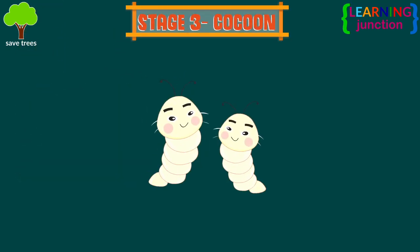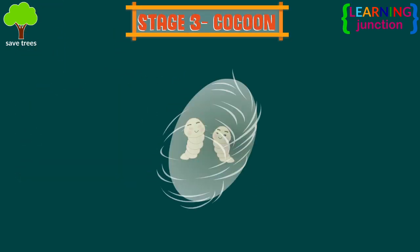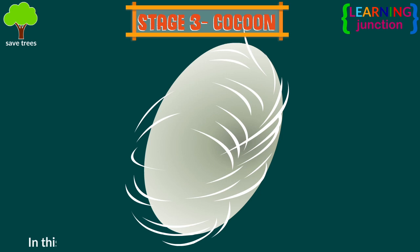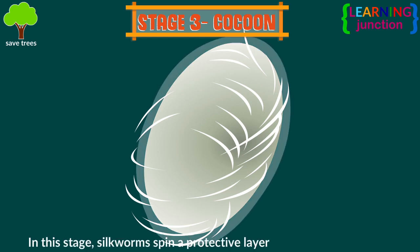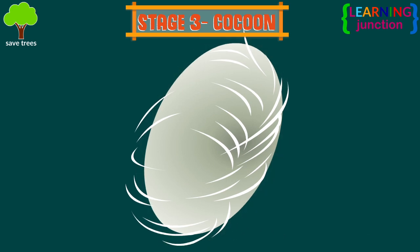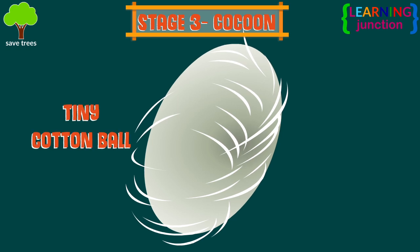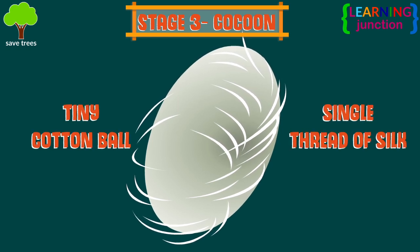Stage 3: Cocoon. In this stage, silkworms spin a protective layer of cocoon around itself. It is the size of a tiny cotton ball and is made of a single thread of silk.